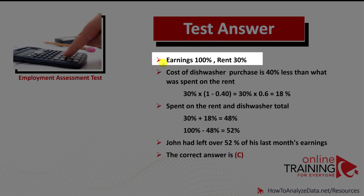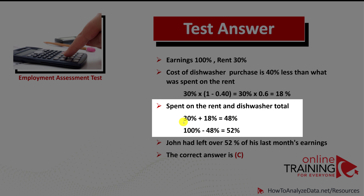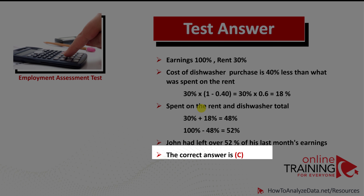If you look at the initial problem, the earnings could be represented as 100%. Rent would be 30%. If you subtract rent from earnings, the leftovers will be 70%. John also purchased a dishwasher, which is 40% less than he spent on rent. 40% less means 1 minus 0.4, which is 0.6. So to calculate cost of dishwasher, we multiply 30% by 0.6, which equals 18%. Adding 30 plus 18 equals 48%. Subtracting 48 from 100 gives 52. So John has 52% of his last month's earnings left after paying rent and the dishwasher. The correct answer is choice C.